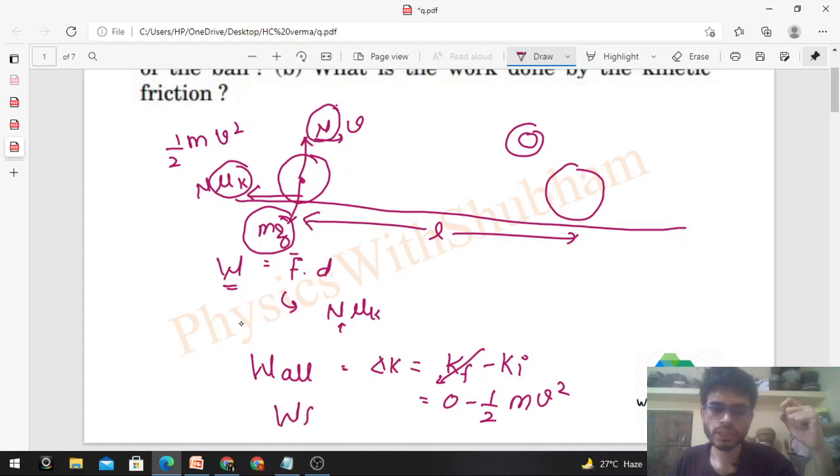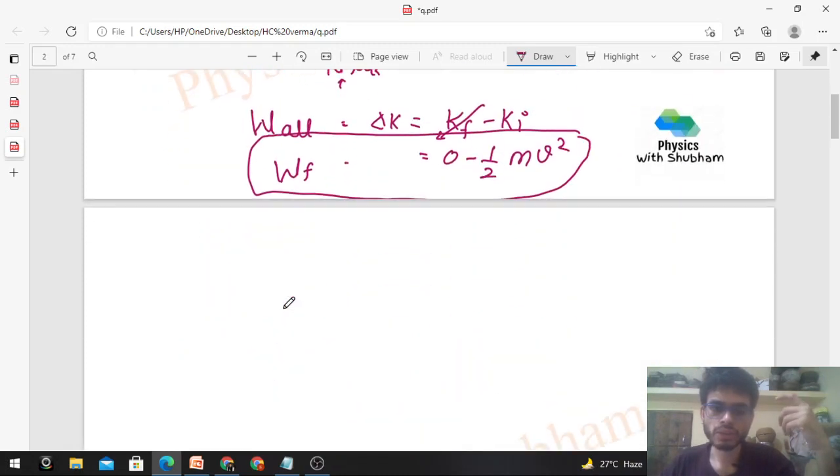Work will be of this friction force. So work done by the friction force that will be minus half of M V square. So this is the work done by the friction force. Ya toh is tarah se nikal sakti ho. Ya phir work done you can also write it as work done by the net force on the ball.